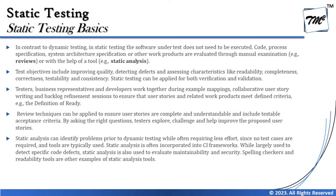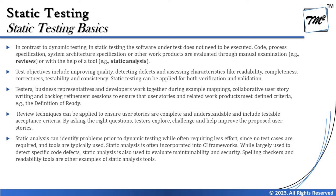Review techniques can be applied to ensure user stories are complete, understandable, and include testable acceptance criteria. By asking the right questions, testers explore, challenge, and help improve proposed user stories. Static analysis can identify problems prior to dynamic testing, often requiring less effort since no test cases are required and tools are typically used. Static analysis is often incorporated into CI frameworks, and while largely used to detect specific code defects, it is also used to evaluate maintainability, security, spelling, and readability.